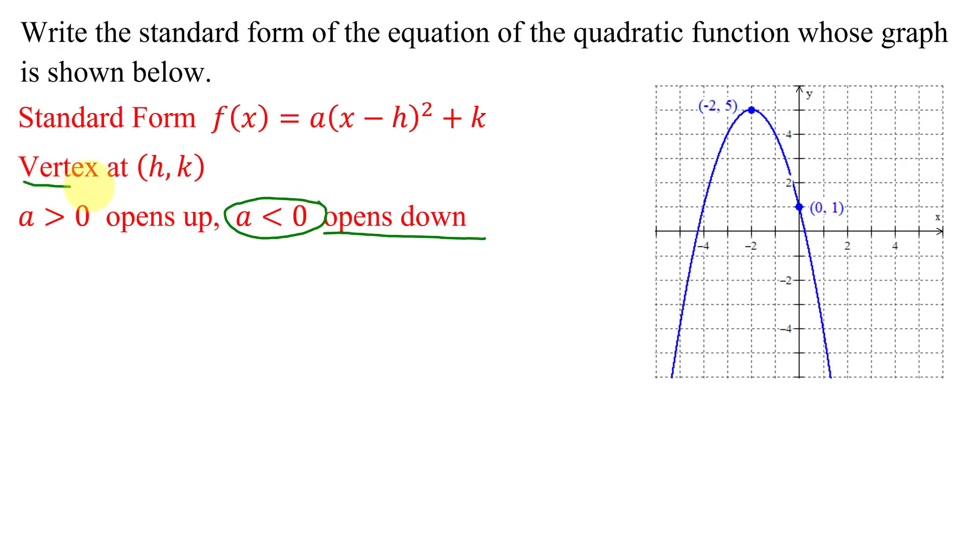Were we given the vertex in this case? Remember, on a parabola that opens down, the vertex is the highest point on the graph, this point here. So that is the point with the ordered pair (h, k). So I now know that h, the x value of the vertex, is at negative 2.